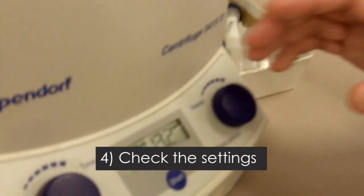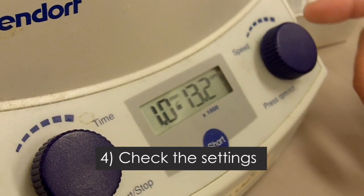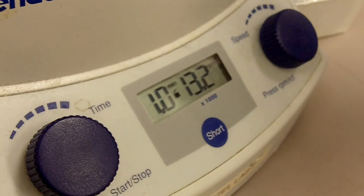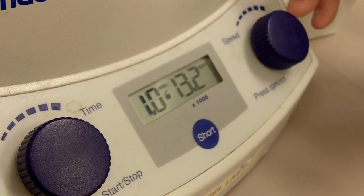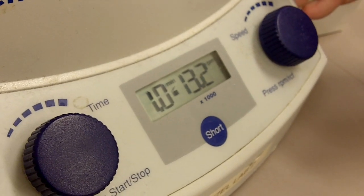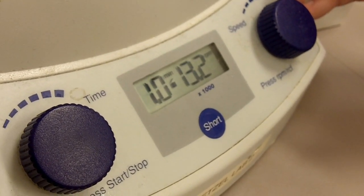The last thing we need to check before we use the centrifuge is to check the settings. There are usually two settings, one is time, the other one is speed. Time isn't really that important here, but what's most important is the speed. You want to make sure the centrifuge is set at a speed that is not going to break the tube.